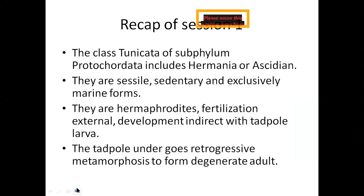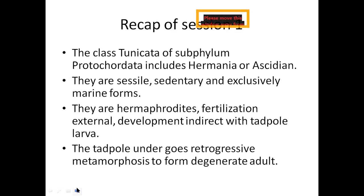Before starting with the morphology of Herdmania, let us have a brief introduction regarding this organism. As we all know, the phylum Chordata consists of a subphylum known as the Protochordata, which consists of ascidians. The Urochordata of subphylum Protochordata consists of ascidians. Now, they are sessile organisms, meaning they are directly attached to the substratum without any stalk or appendage. Since they are attached, they are sedentary forms and they are exclusively marine.